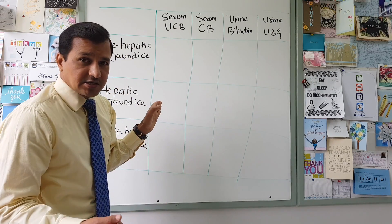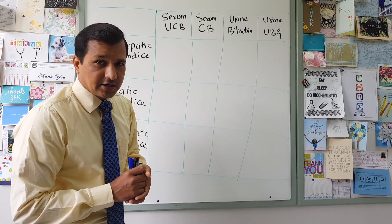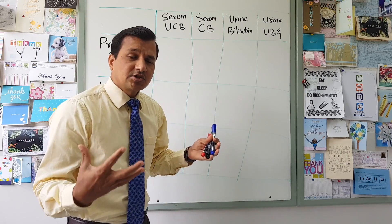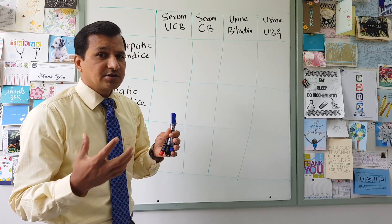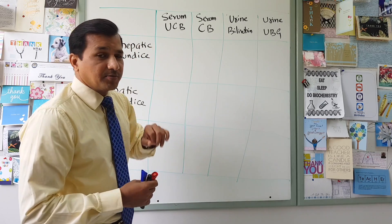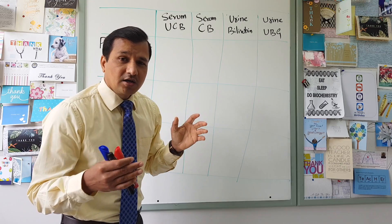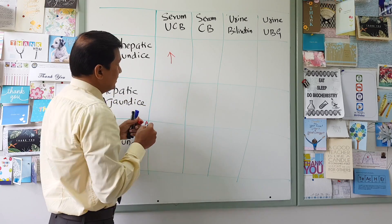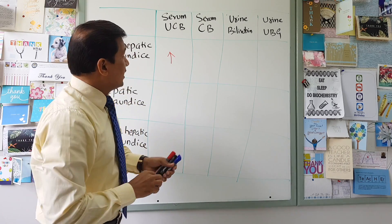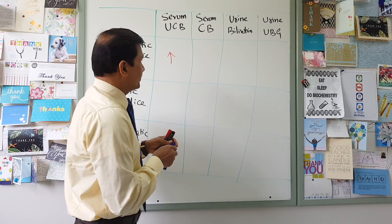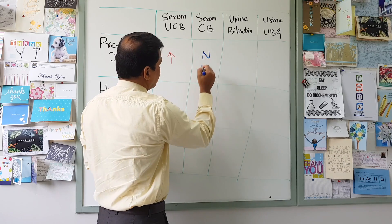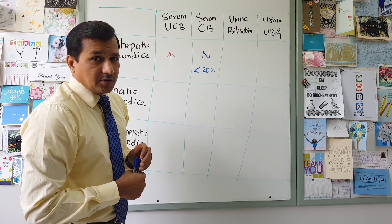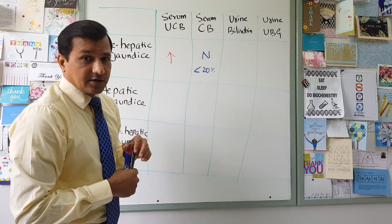In pre-hepatic jaundice, the most common cause is hemolytic anemias. There is too much unconjugated bilirubin coming to the liver, and conjugation is going on at a maximum rate, producing conjugated bilirubin. But still there is too much bilirubin to handle, which is why there is elevation of unconjugated bilirubin in the serum. Conjugated bilirubin levels will be normal — usually less than 20% of total bilirubin. So only unconjugated bilirubin is elevated in pre-hepatic jaundice.